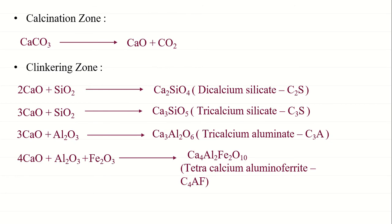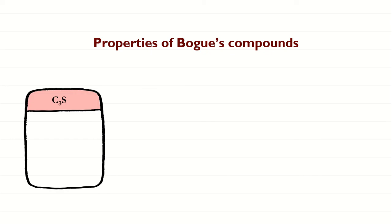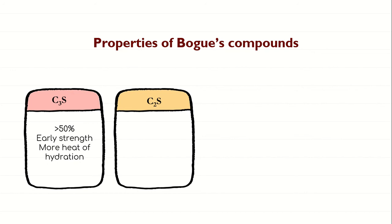The first Bogue compound is C3S, which is tricalcium silicate. Of all four Bogue compounds, tricalcium silicate is the most abundant — it is generally more than 50% of the total compounds present. This Bogue compound is responsible for early strength; the first seven days of strength is due to C3S hydration. This compound produces more heat of hydration, and a higher C3S content is better for cold weather concreting.